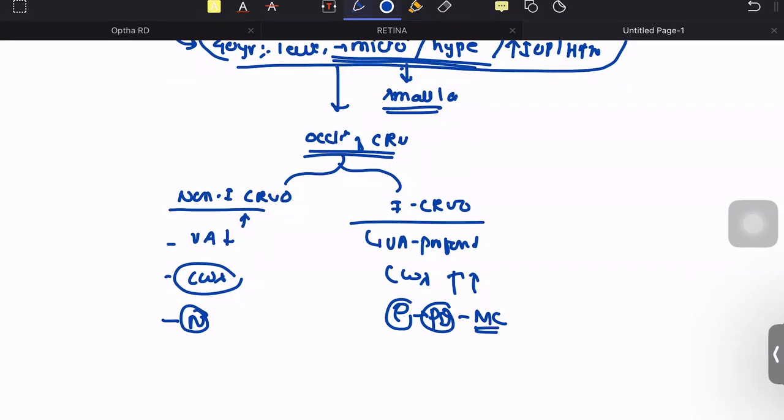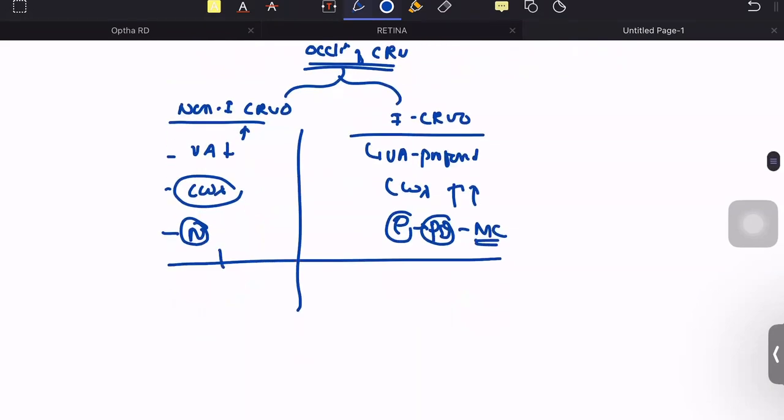Pupillary reactions are absolutely normal in non-ischemic variety of CRVO. So this is how we differentiate non-ischemic from ischemic clinically. Then we proceed for fundus fluorescent angiography.